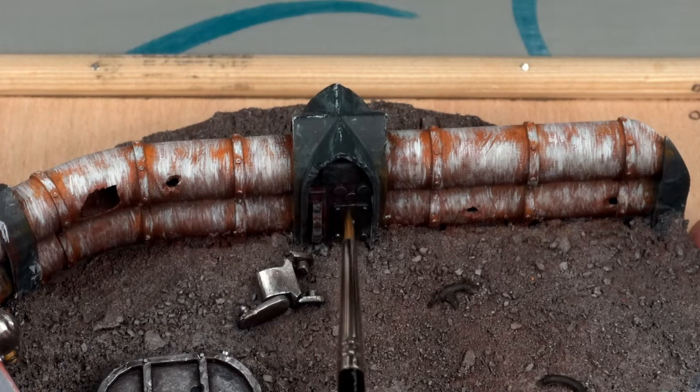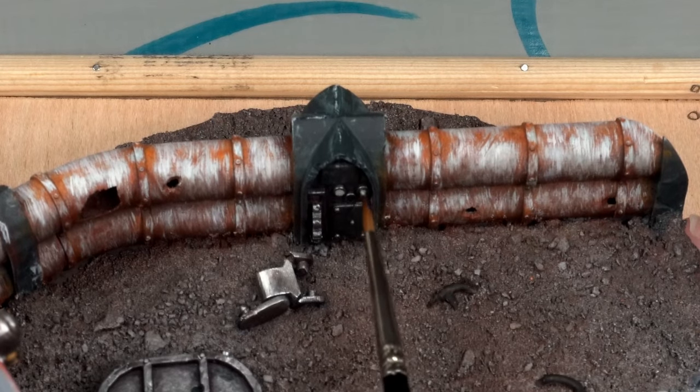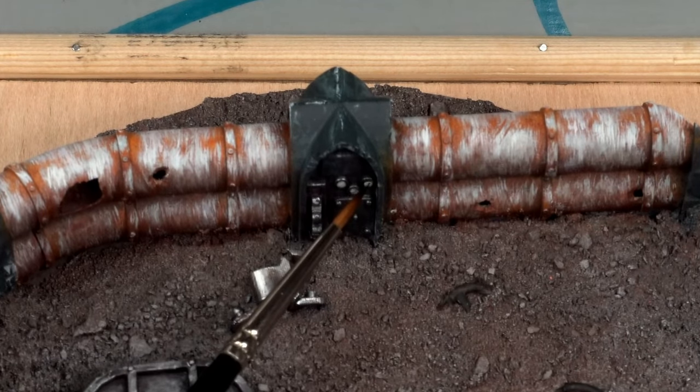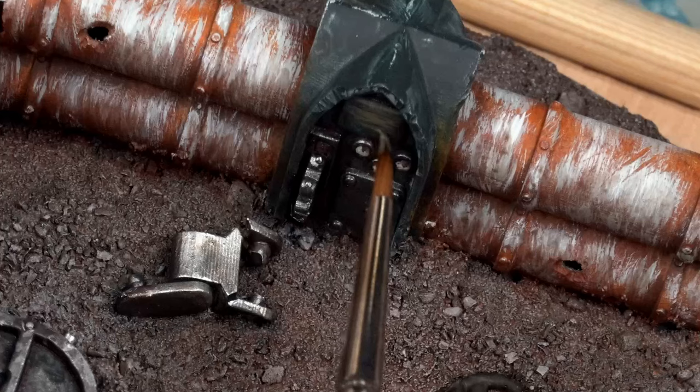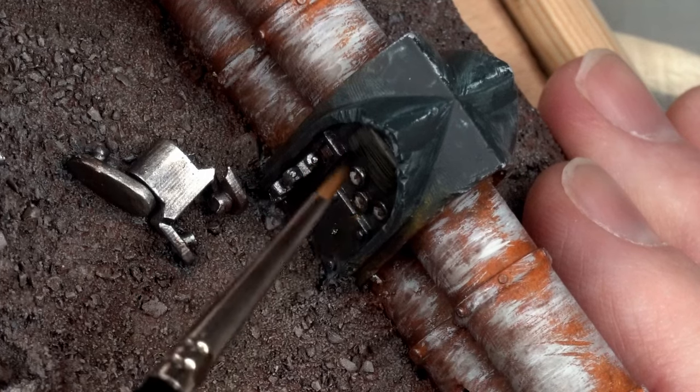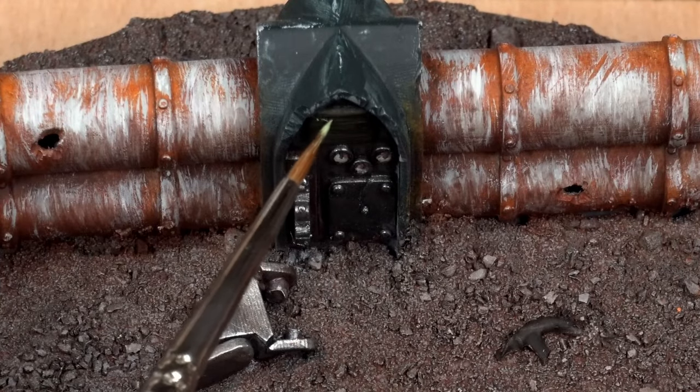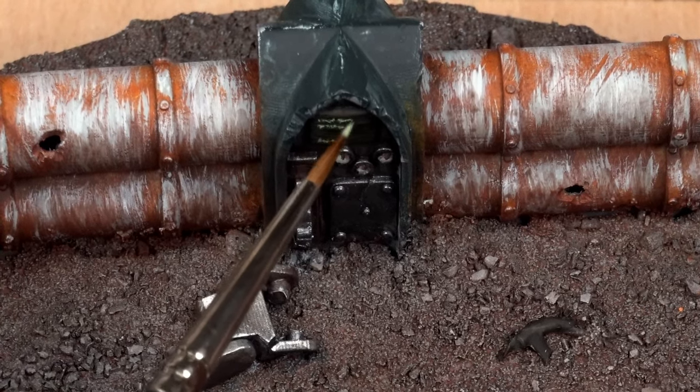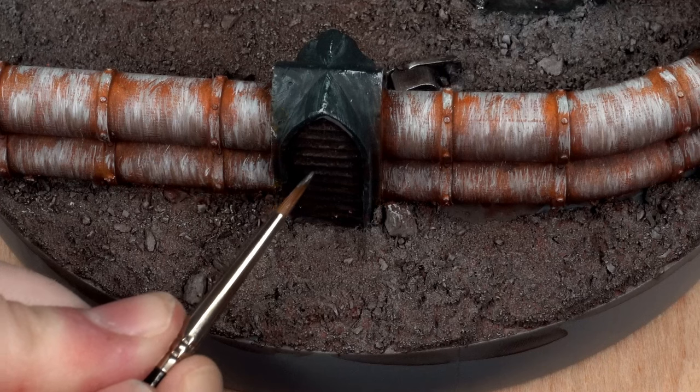The final detail was the control box on the pipes. I faffed about adding little details to the screen and dials while thinking about the casing. Bare metal would look odd next to the rust, but more orange or brown wouldn't stand out. Dark grey felt like the easiest option.